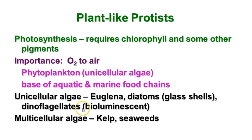The plant-like protists undergo photosynthesis, requiring chlorophyll and often other pigments to trap light energy and use it to split water and make sugars. They're very important because they are the major contributors to oxygen in the air. Although trees are important, Earth is about 70% covered with water, so it makes sense that algae and phytoplankton produce a much higher percentage of the oxygen—and that's the case.